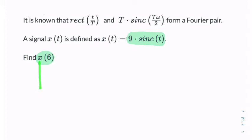And if you notice, that x is lowercase x. So what they want is x of t, where t equals 6. So we actually don't need to use the Fourier pair at all.